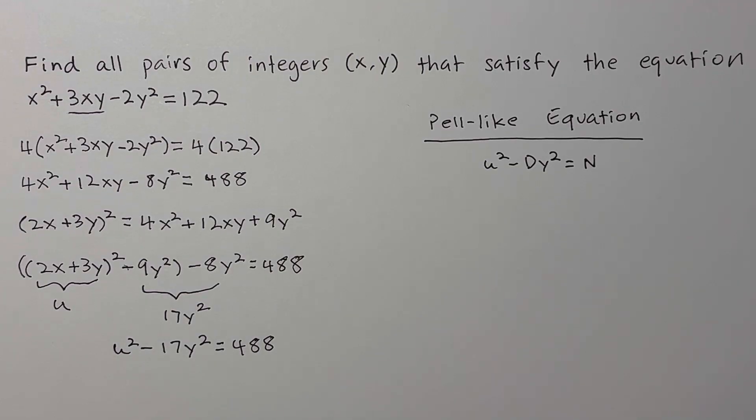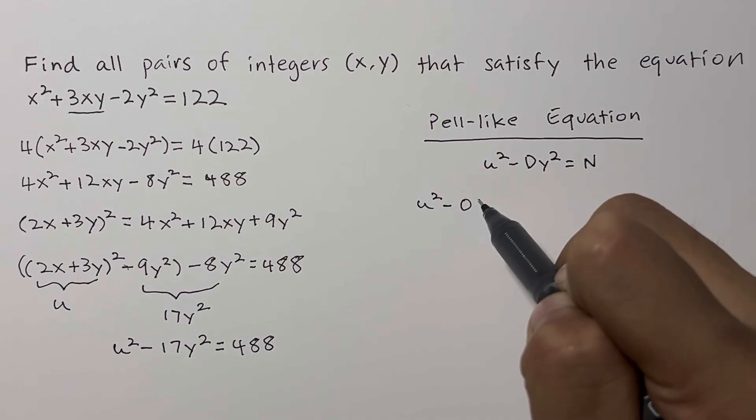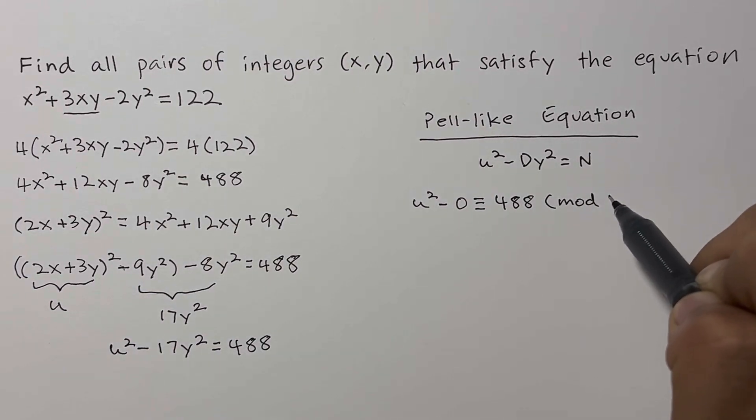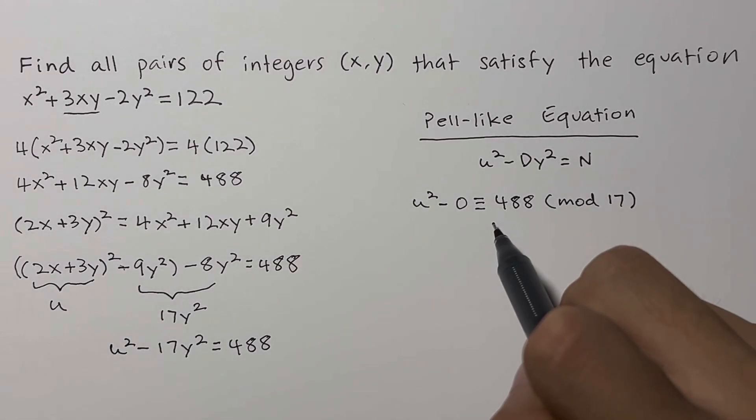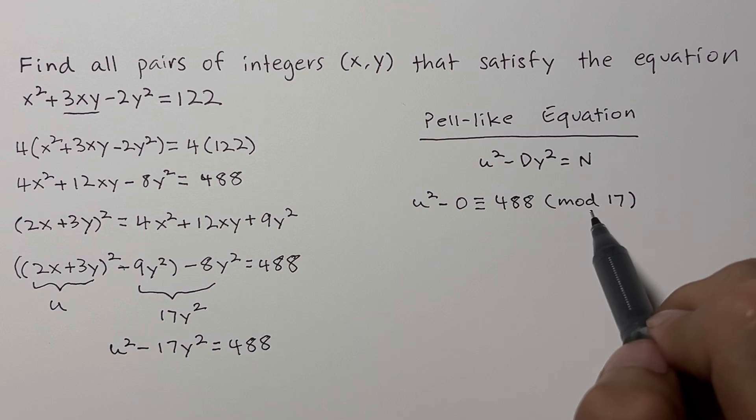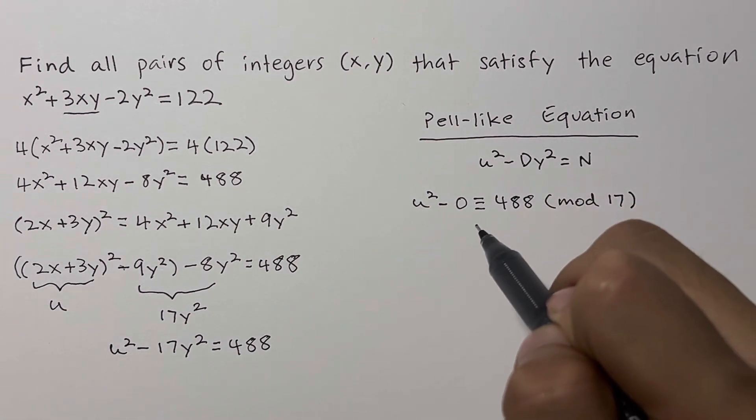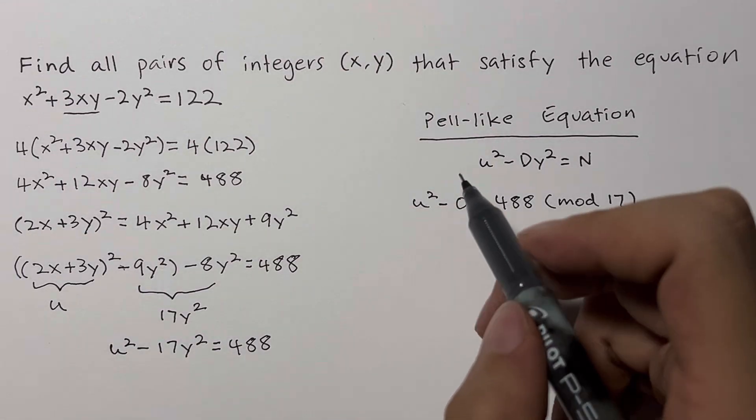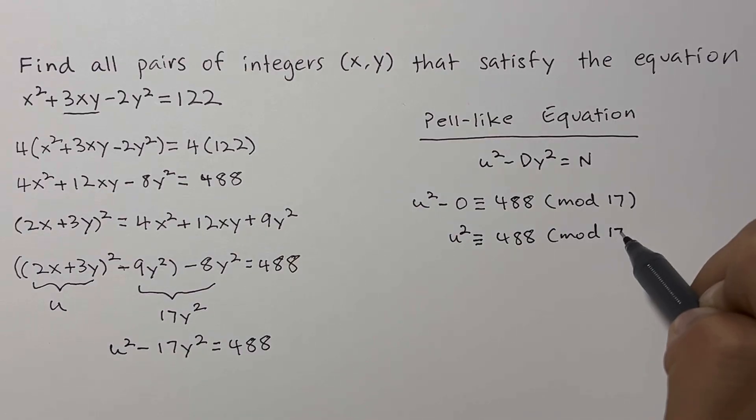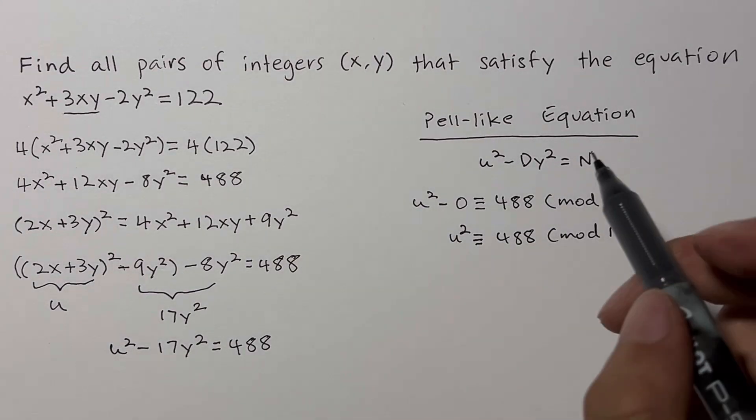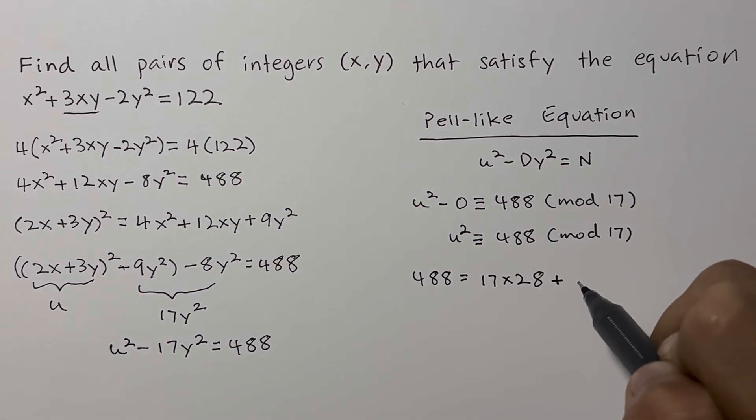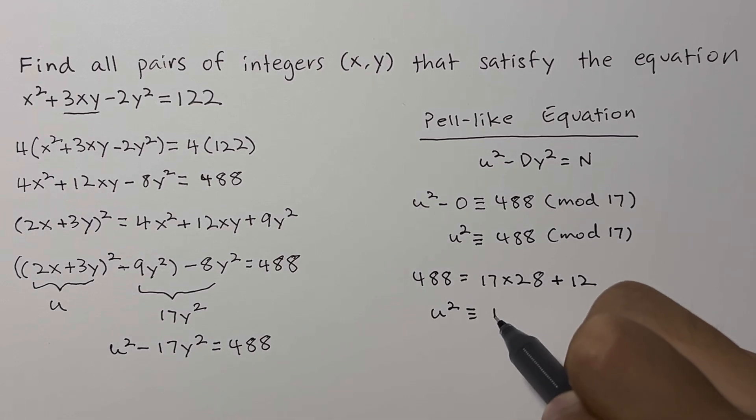Basically, we want to have u² - 0 ≡ 488 (mod 17). If you've never done congruent modulo before, this would mean that we want to find the remainder when 488 is divided by 17. The magic here is that 17y² is always a multiple of 17, so we'll have a remainder of 0. So, we'll have u² ≡ 488 (mod 17). Now, we just need to figure out the remainder of 488 when divided by 17. A quick calculation shows that 488 = 17 × 28 + 12, giving that u² ≡ 12 (mod 17).